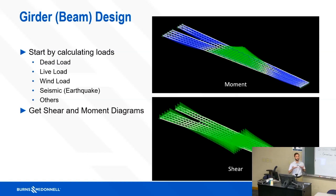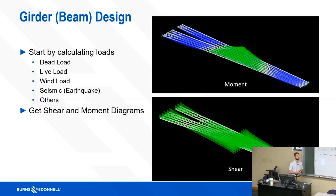We start by calculating different loads. The dead load considers that 12- or 13-foot girder — it weighs a lot, so there's significant deflection and stress just from its self-weight. We also account for the bridge deck weight, barriers, and light poles. Then there's live load — essentially vehicle traffic and trucks. We consider wind loading, seismic and earthquake loading, and for river bridges we even calculate barge impact: how much does the barge weigh, how fast does it travel, and how many millions of pounds of force do we need to design for?